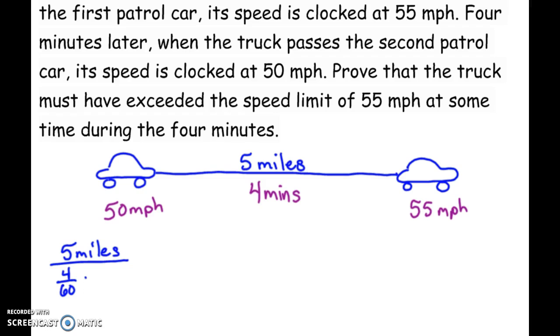So let's calculate this in miles per hour. Four minutes is what fraction of an hour? Four over 60, which is 1/15. So we've got to flip it over. So what is 5 times 15? 2 times 15 is 30. 30 times 2 is 60. Plus another 15 is 75. So his average velocity was 75 miles per hour over this interval.